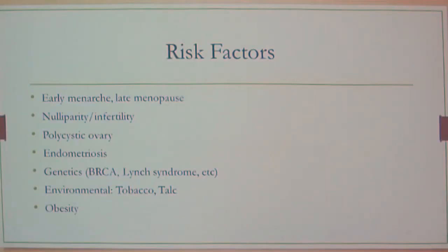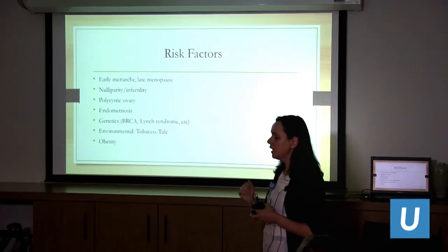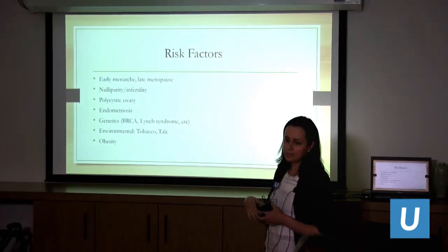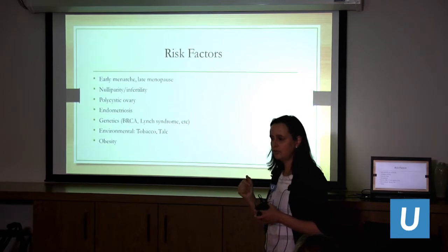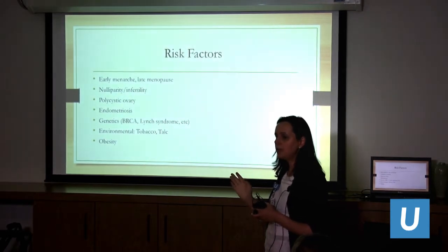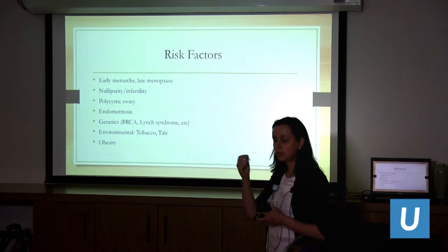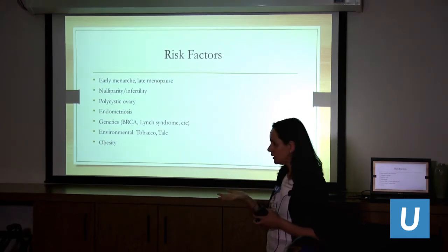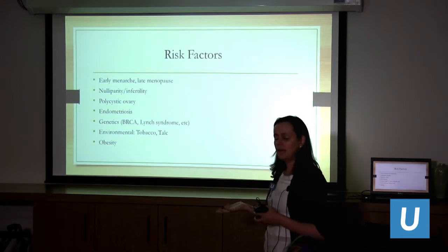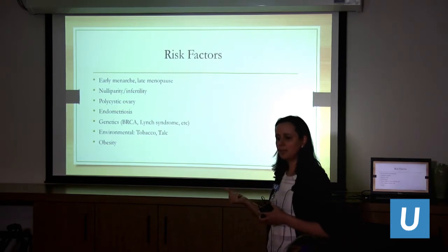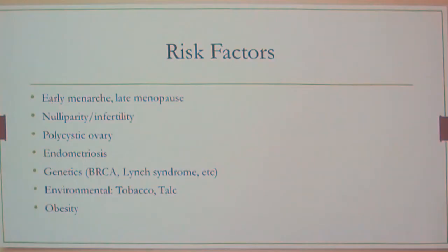Genetics — BRCA as mentioned — and Lynch syndrome, a familial genetic disorder linked to ovarian and colon cancer, are also risk factors. If families have both ovarian and colon or uterine cancer, Lynch syndrome is something to consider. Environmental factors like smoking seem to have some correlation with ovarian cancer, though it's unclear how strong that link is.